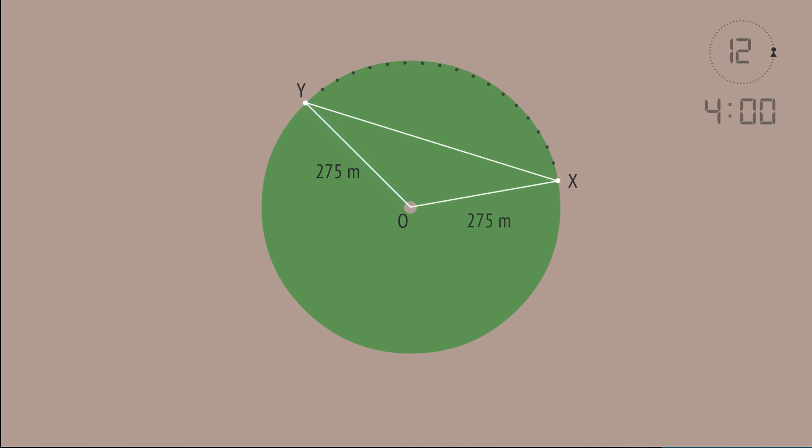First, we isolate this isosceles triangle, made by the two radii and the length XY. We can calculate this angle by considering what fraction of a complete rotation has been made. If a complete rotation takes 12 hours, then 4 hours represents 4 twelfths, or one third of 360 degrees, which equals 120 degrees.